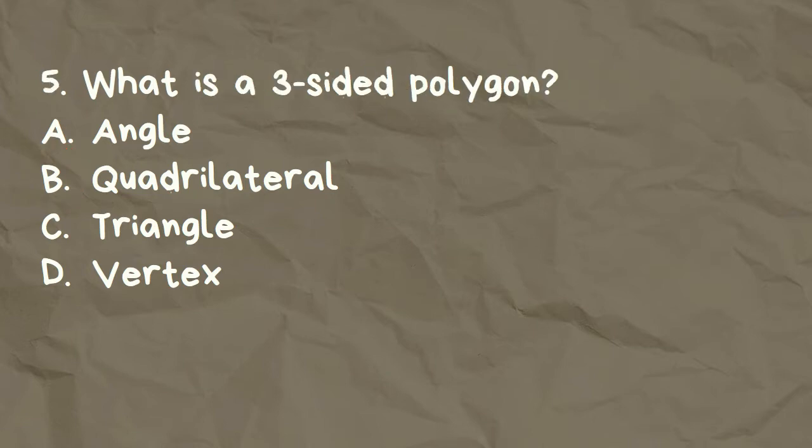What is a three-sided polygon? A. Angle, B. Quadrilateral, C. Triangle, D. Vertex.